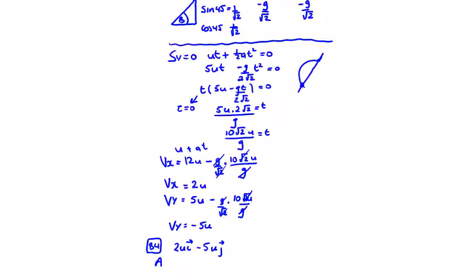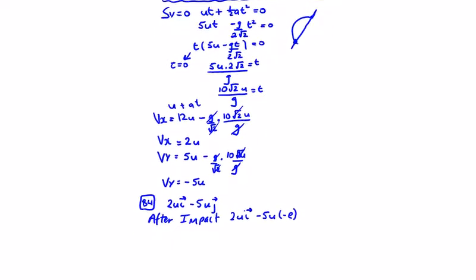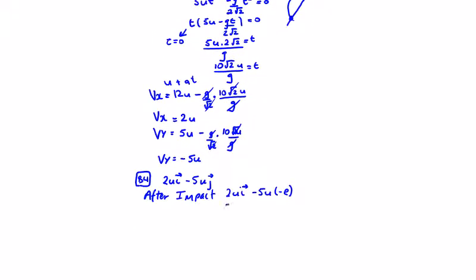And then after impact, it's going to be 2u minus 5u times minus e. And what were we told e was? 2 over 5. And we're asked to show that the particle rises vertically. So we end up with 2u in the i direction minus 5u times minus 2 over 5, which gives us 2u in the i direction plus 2u in the j direction.